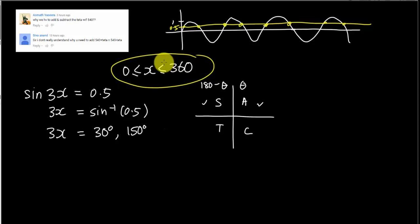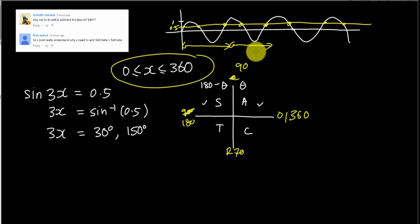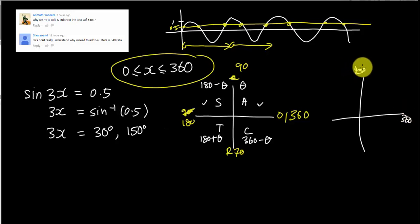What you've learned is the first cycle: from 0 to 90 to 180 to 270 to 360. But the sine graph can go to infinity, so there's a second cycle. To find values in the second cycle, I add 360 to all the angles. In the second rotation: 360 to 450 to 540 to 630 to 720. So 540 appears in the second cycle.